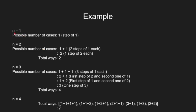Let's start with an example. For n equal to 1, that is just 1 staircase, the number of possible cases is 1, which is the child taking 1 step to reach up.